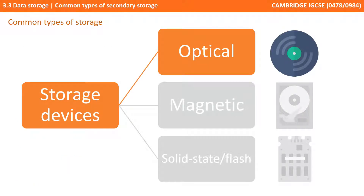Let's start by looking at optical storage devices. In the case of optical storage, we have an optical drive and a choice of media, which includes compact disk read-only or CDR, compact disk read-write or CDRW, digital versatile disk read-only or DVDR, digital versatile disk read-write or DVDRW, and Blu-ray, which was designed to supersede DVD and has the greatest storage capacity of all the ones mentioned.